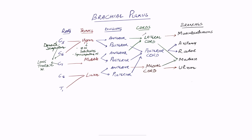Moving to minor branches from the cords: the lateral pectoral nerve arises from the lateral cord and supplies the pectoral muscles. From the medial cord — which actually gives the maximum number of minor branches — you get the medial pectoral nerve, the medial brachial cutaneous nerve, and the medial antebrachial cutaneous nerve. These are sometimes referred to as the medial cutaneous nerve of the arm and the medial cutaneous nerve of the forearm.